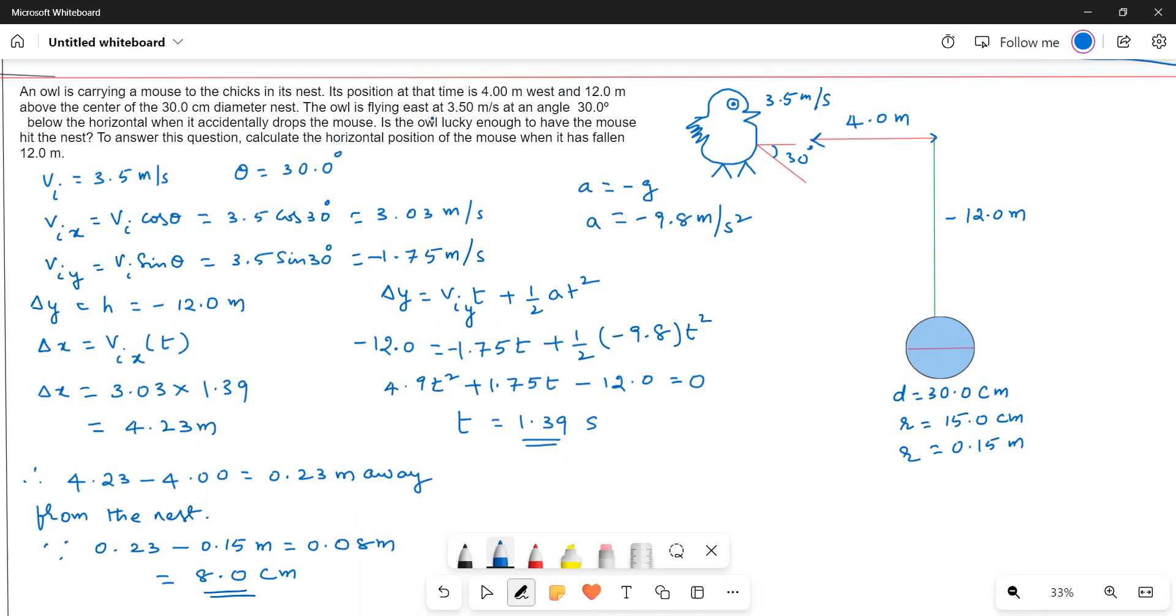The owl is flying east at 3.5 meters per second at an angle 30 degrees below the horizontal when it accidentally drops the mouse. Is the owl lucky enough to have the mouse hit the nest?